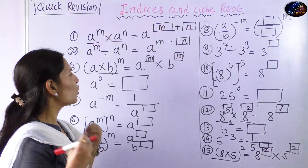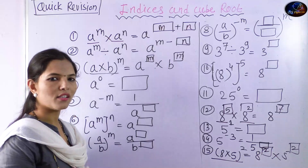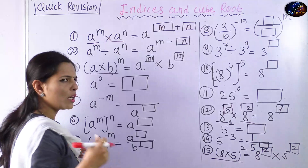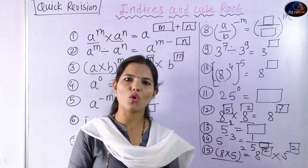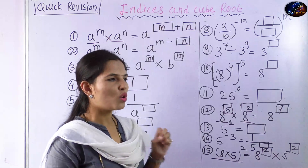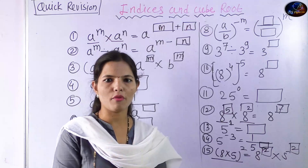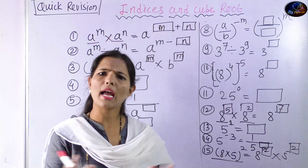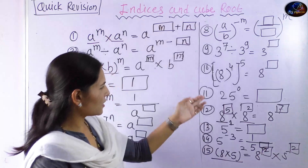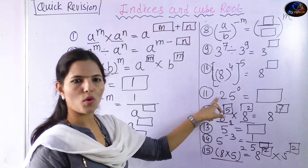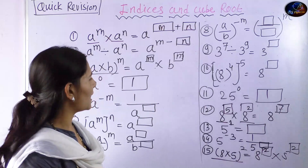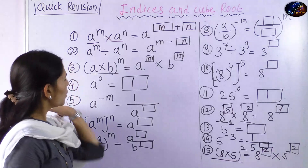Now, a raised to 0 is equal to 1. Any base raised to the power of 0 equals 1. For example, 542 raised to 0 — the answer is 1. Similarly, 25 raised to 0 — the answer is also 1. You can see how simple this rule is.